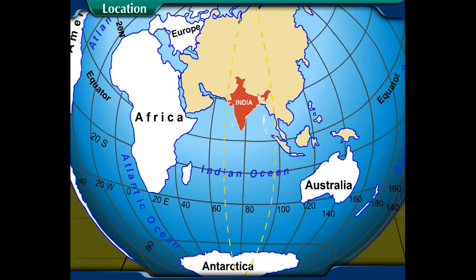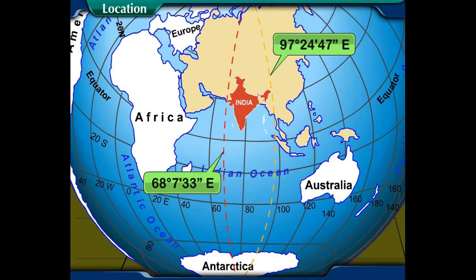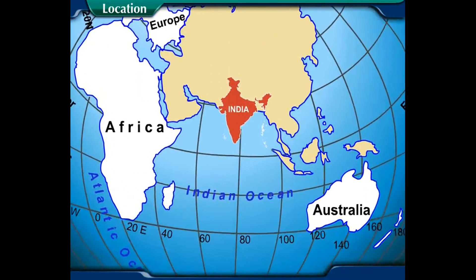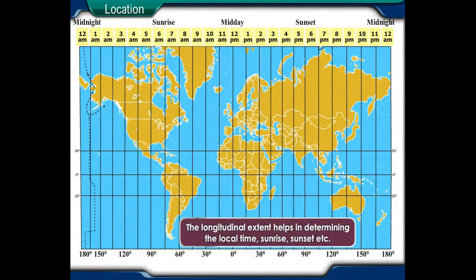The longitudinal extent of India is from 68 degrees 7 minutes 33 seconds east to 97 degrees 24 minutes 47 seconds east, which makes it 29 degrees 17 minutes 14 seconds. The longitudinal extent helps in determining the local time, sunrise, sunset, etc.